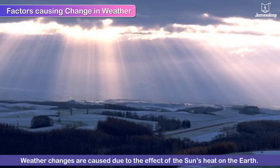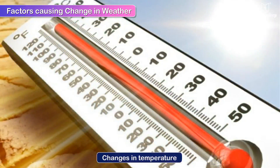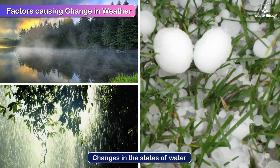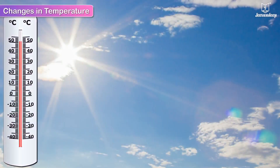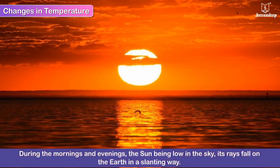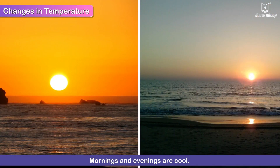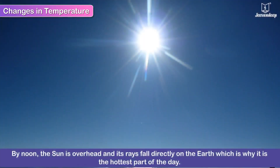Factors causing change in weather: weather changes are caused due to the effect of the Sun's heat on the Earth. Changes in temperature, movement of air, and changes in the states of water are some phenomena caused by the Sun which result in change in weather. During mornings and evenings, the Sun being low in the sky, its rays fall on the Earth in a slanting way, so mornings and evenings are cool. By noon, the Sun is overhead and its rays fall directly on the Earth, which is why it is the hottest part of the day.